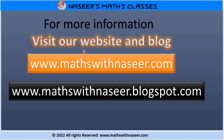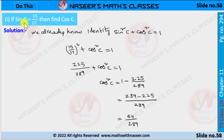For more information visit our website www.mathswithnasir.com. Now we are going to solve page number 294, chapter 11 trigonometry. If sin c equals 15 by 17, then find the value of cos c.